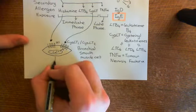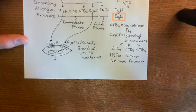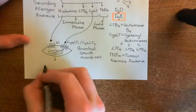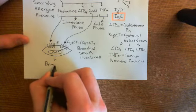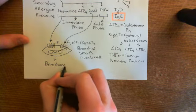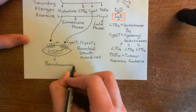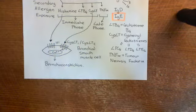Contraction of the bronchial smooth muscle cells causes bronchoconstriction — constriction of these rings of bronchial smooth muscle surrounding the bronchus. This is transferred to the inner layers, causing constriction of the bronchial lumen and narrowing of the airways. This could be happening in absolutely every bronchus.